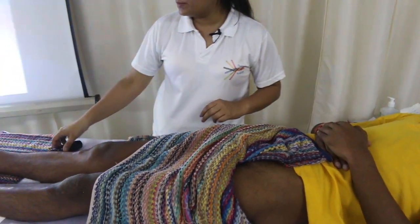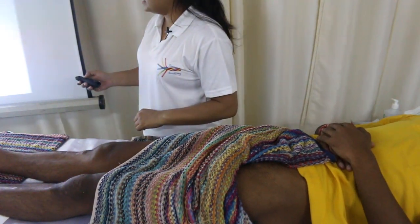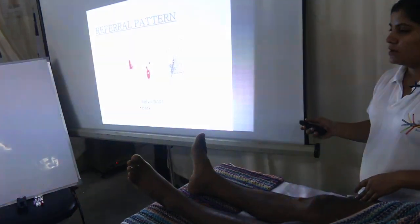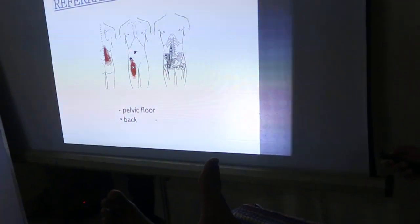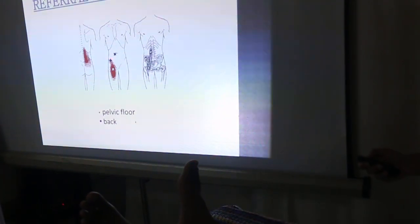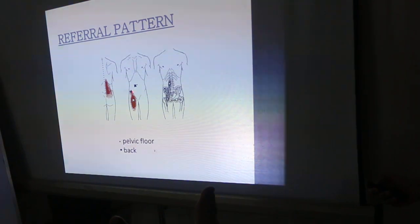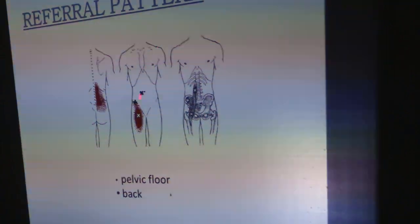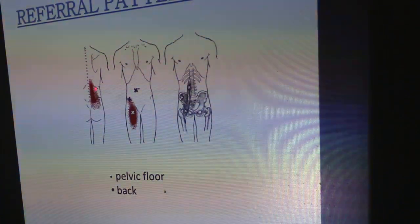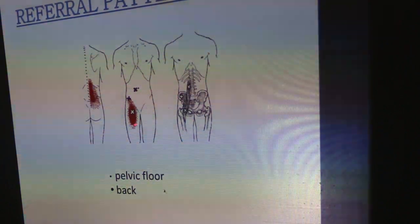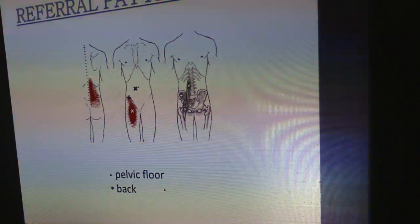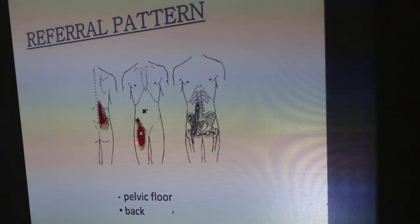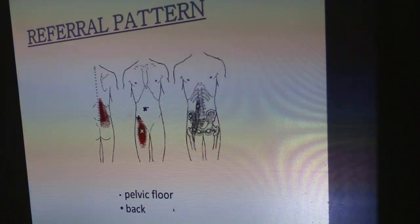So two trigger points will be there for us. This trigger point is for psoas major, this one is for iliacus, and the lower one is for iliopsoas. You can see the referral pattern for iliopsoas covers the back and the front of the thigh. So whenever your patient complains of pain in the lower back and in the front thigh, then it is going to be iliopsoas.